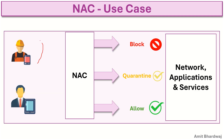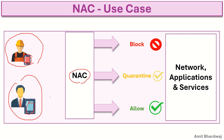Both outsourced and in-house users have their own respective devices — whether mobile, iPad, or related things — and they need access to network resources. That is where NAC comes into picture. It acts as a bodyguard and stops users who are using non-compliant devices, and accordingly takes one of three decisions: either to block the traffic, quarantine it, or allow it.